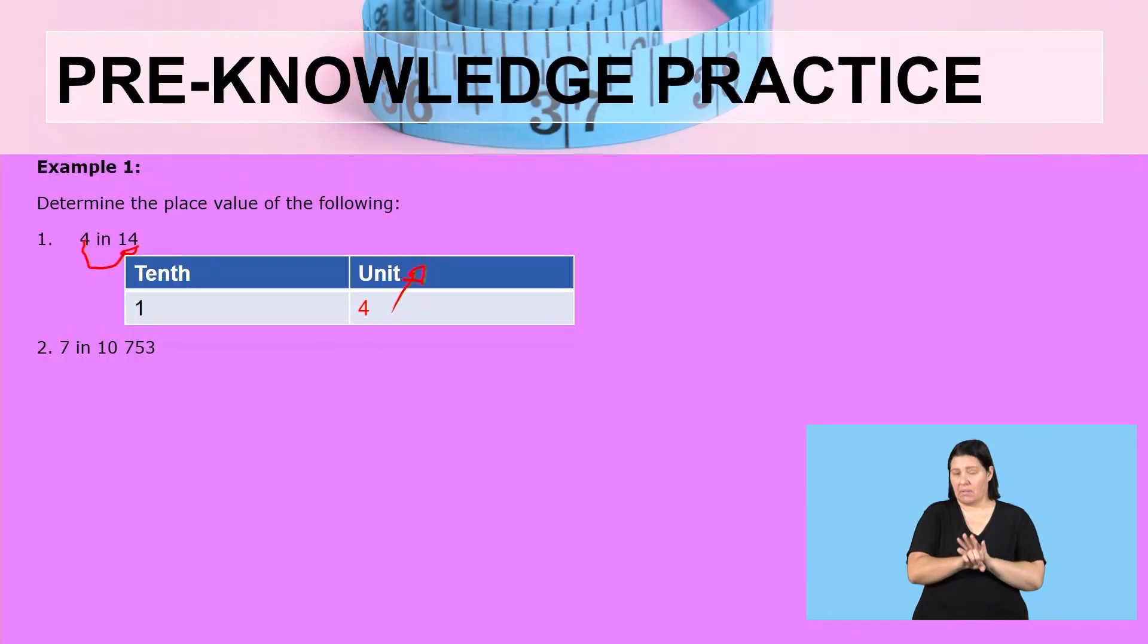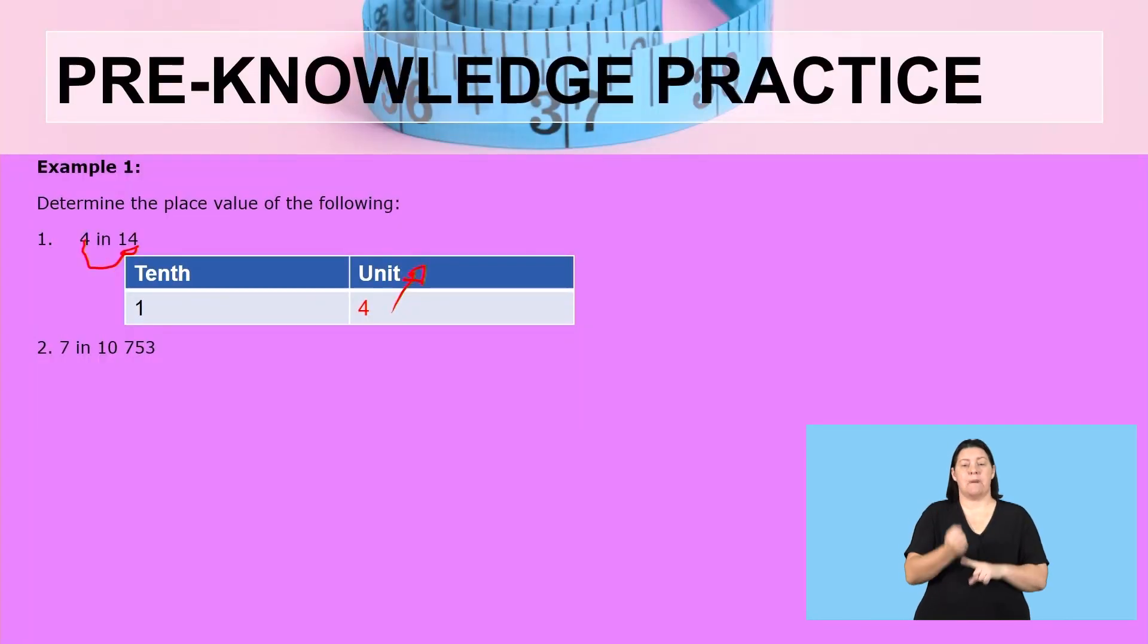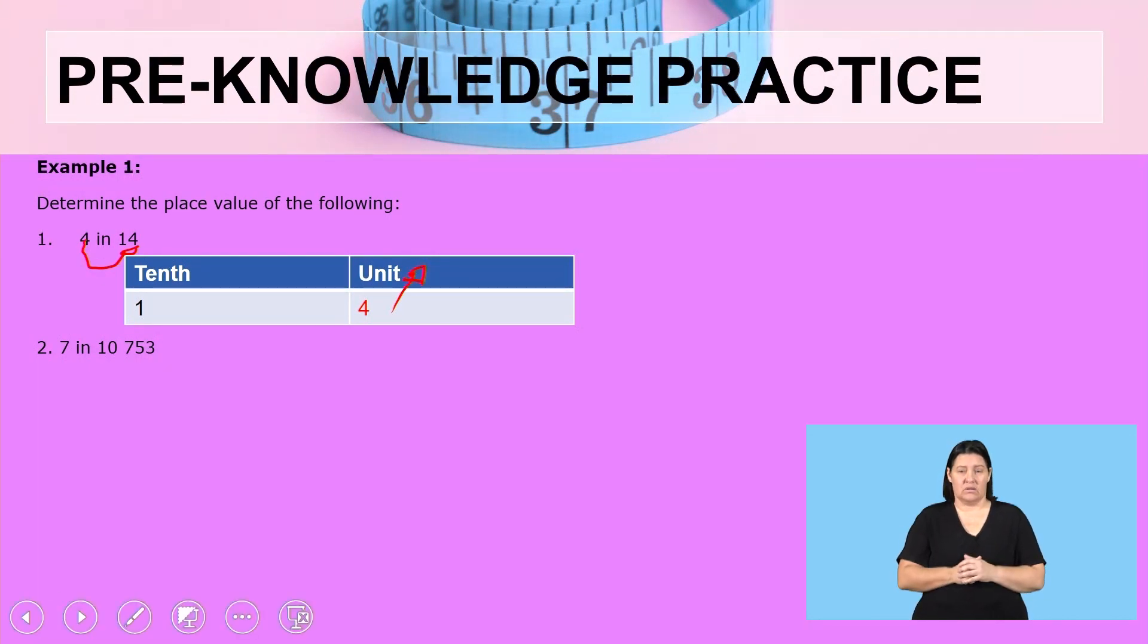Let us have a look at the second example. We need to determine the place value of 7 in the number 10,753. You need to identify the digits in this number. We have five digits. We need to determine the place value of each digit. So 1 is 10,000, 0 is a thousand.